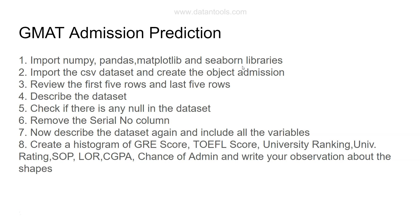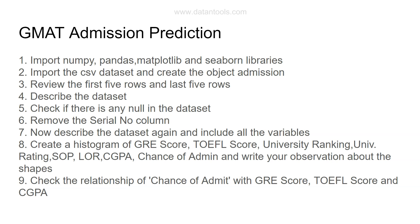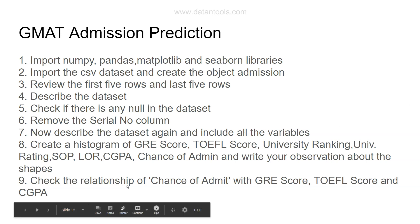Check the relationship of chance of admit with GRE score, TOEFL score, and CGPA. This will show the behavior of each score against the chance of admit — whether the relationship is positive, upward, downward, or some other shape. This can be done with a single function from the Seaborn library, or you can refer to my previous videos on Seaborn.